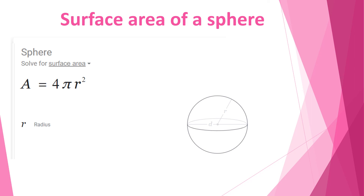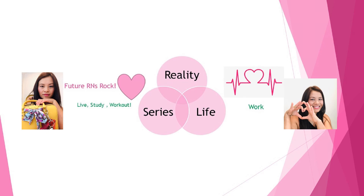Then we have the surface area of a sphere — this will likely come out on the exam. To solve the surface area of a sphere we have the formula A equals 4 pi r squared, where r is the radius and it will be given in the problem.